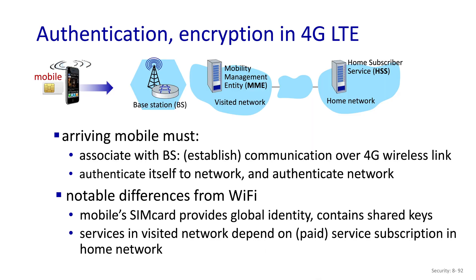In Chapter 7, we saw a bit about how authentication works in cellular networks, but we didn't talk about the encryption aspects at all. The arriving mobile unit must associate with a base station and authenticate itself to the network, as well as authenticating the network.